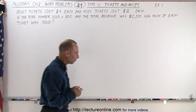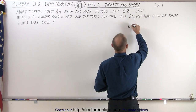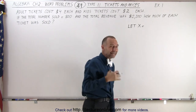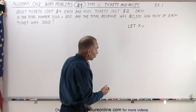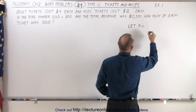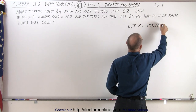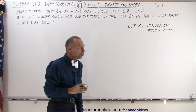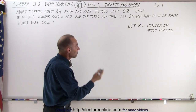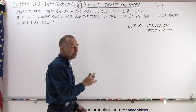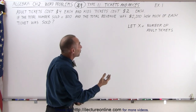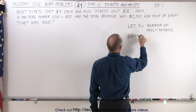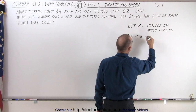We start off with the usual premise: let x equal something. Since we don't know how many kids tickets or adult tickets were sold, we let x equal the number of adult tickets. And since a total of 800 were sold, 800 minus x is the remainder — which in this case would be the number of kids tickets.